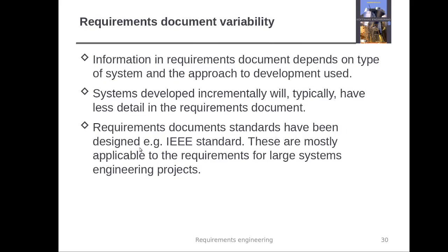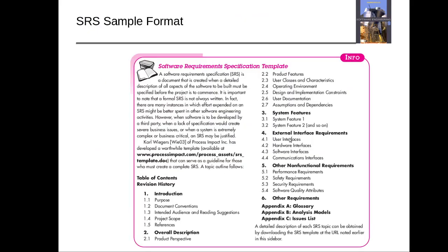Standards for requirements documents have been designed by IEEE and others. One format, taken from a common textbook, starts with an introduction covering purpose, scope, and similar items, followed by an overall description including features, class diagrams, assumptions, and dependencies. Then come system features, external interface requirements (hardware and software), non-functional requirements covering safety, performance, and security, and finally appendixes for any additional items.